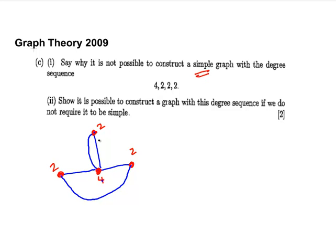Show why it is possible to construct a graph with this degree sequence if we do not require it to be simple. So it doesn't have to be simple. So, that's that one there. That's enough. We'll end this presentation here.